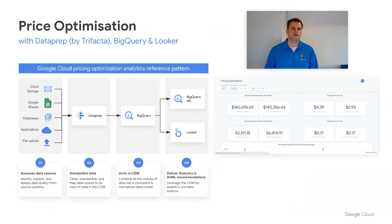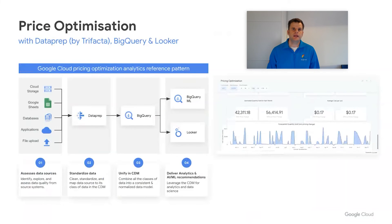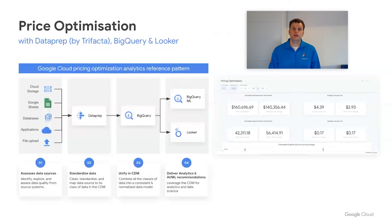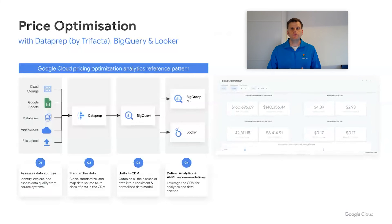The impressive increase in sales was possible thanks to the recommendations surfaced by the price optimization solution, consisting of three main components. First, Dataprep by Trifacta integrated different data sources into a single common data model (CDM). Dataprep is an intelligent data service for visually exploring, cleaning, and preparing structured and unstructured data for analysis, reporting, and machine learning. Second, BigQuery — our serverless cloud data warehouse service — created and stored pricing models in a consistent and scalable way. Finally, with Looker Dashboards, Google Cloud's enterprise-ready BI platform, business teams surfaced insights and were enabled to take action.